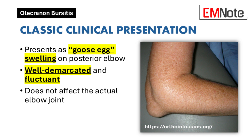Classic Clinical Presentation: The hallmark sign of olecranon bursitis is the characteristic goose egg appearance on the posterior elbow. This swelling is well demarcated and fluctuant, creating a distinctive clinical picture that aids in diagnosis. Importantly, the swelling does not involve the actual elbow joint.